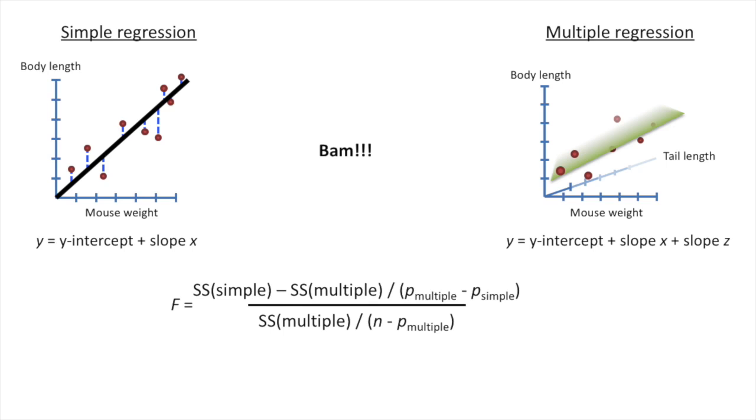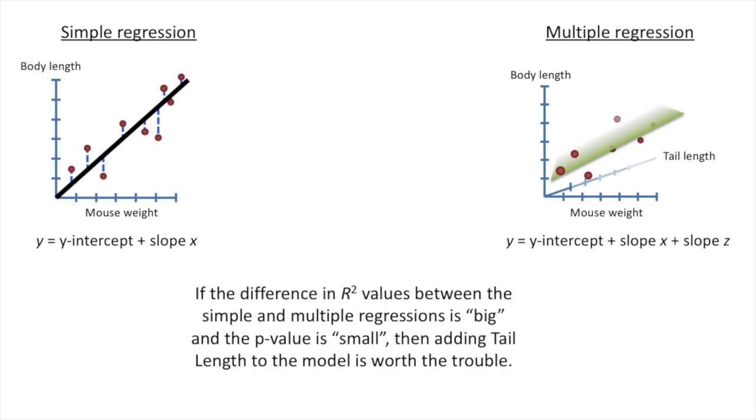BAM! If the difference in r-squared values between the simple and multiple regression is big, and the p-value is small, then adjusting tail length to the model is worth the trouble.